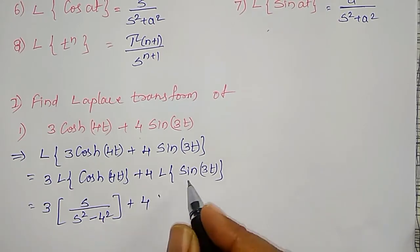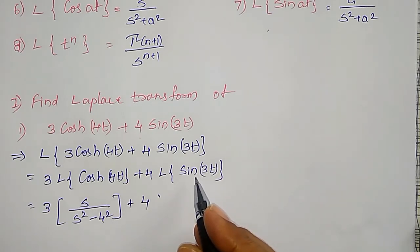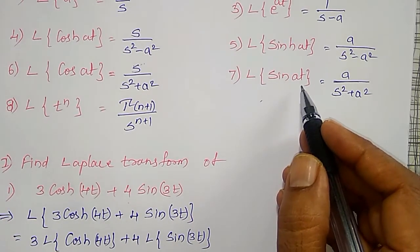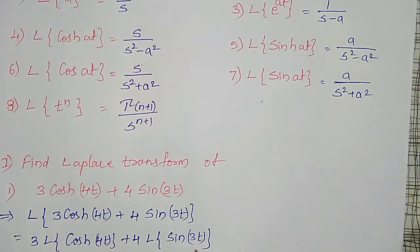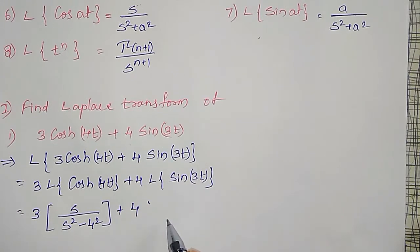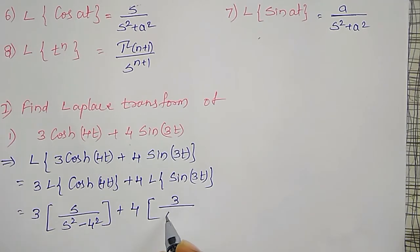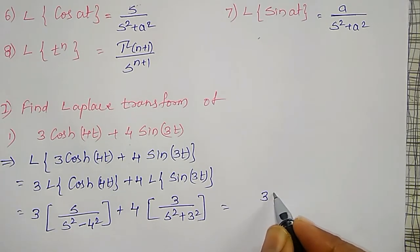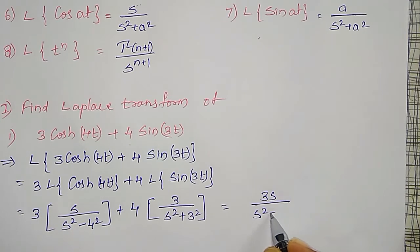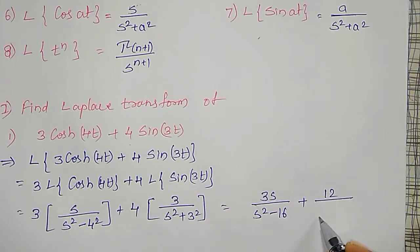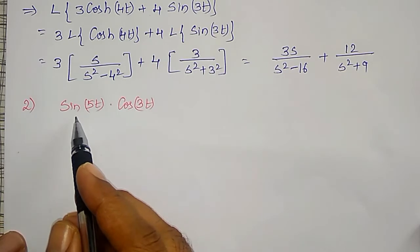For the sine term: 4 times the Laplace transform of sin(3t). Since hyperbolic is not present, sin(at) gives a divided by (s squared plus a squared), with a equal to 3. So this is 3 divided by (s squared plus 9). Simplifying the full expression: 3s divided by (s squared minus 16) plus 12 divided by (s squared plus 9). This is the Laplace transform of the given function.